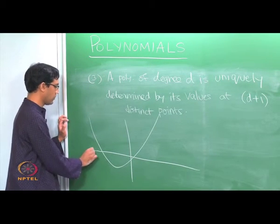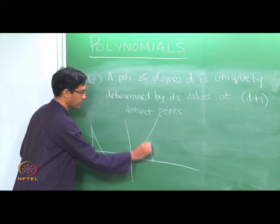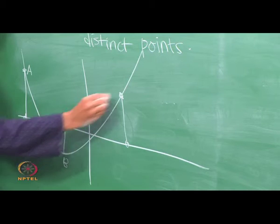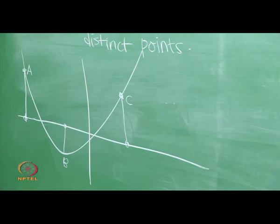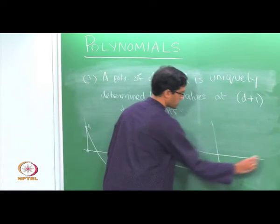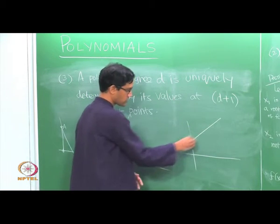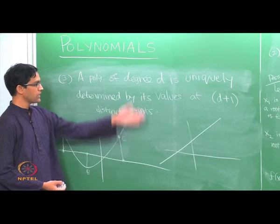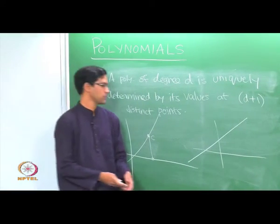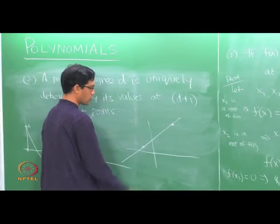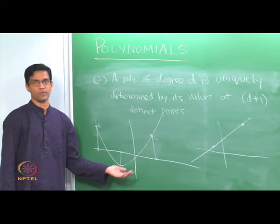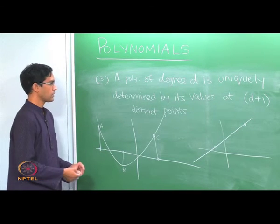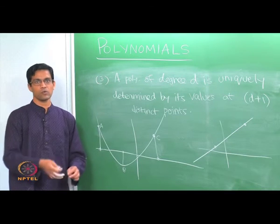One instance of this is: a parabola is uniquely determined if you tell me its values at 3 given points. Through any 3 points a, b, and c, there is a unique parabola. A simpler version: a polynomial of degree 1 has a straight-line graph, and a straight line is uniquely determined by 2 points — there is a unique line through any 2 given points. For a cubic curve, values at 4 points uniquely determine it. This is something we will look at in the next module.